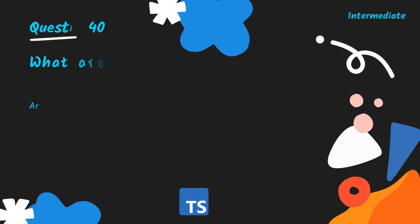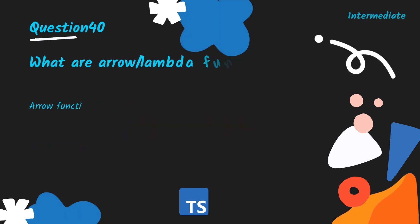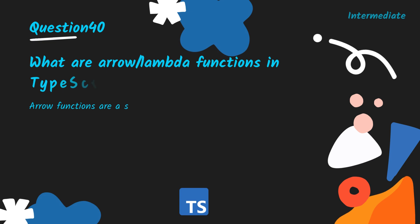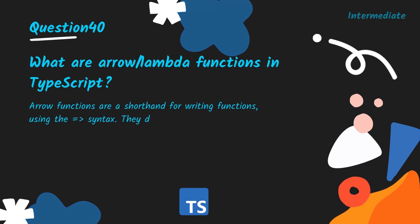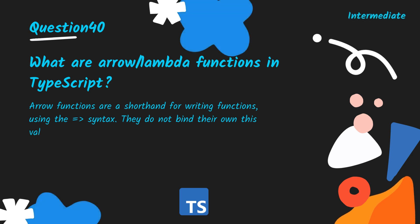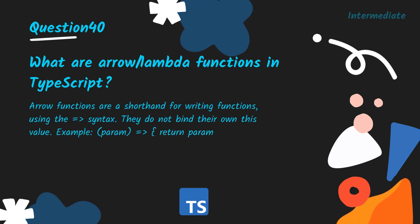What are arrow or lambda functions in TypeScript? Arrow functions are a shorthand for writing functions using the arrow (=>) syntax. They do not bind their own this value. Example: (param) => { return param; }.